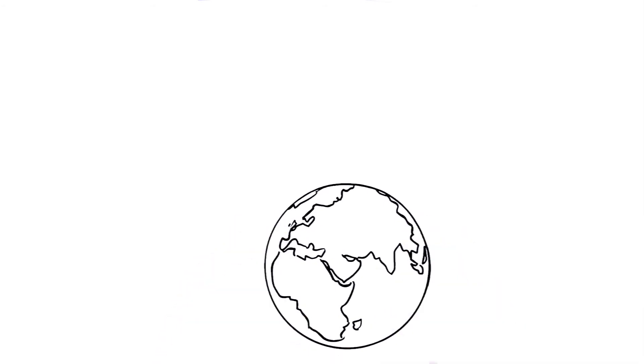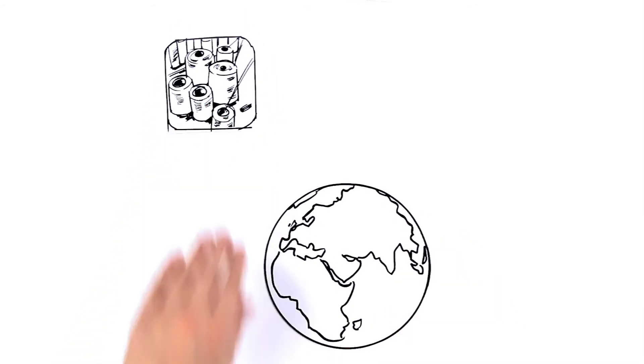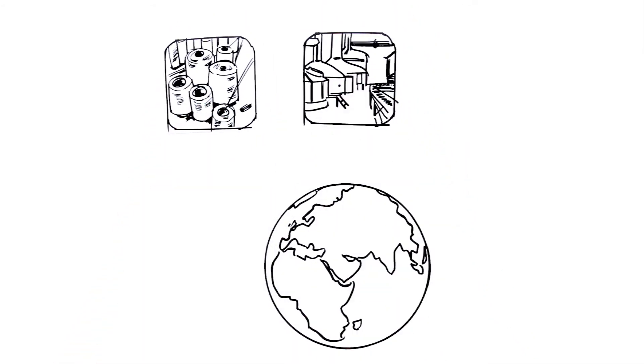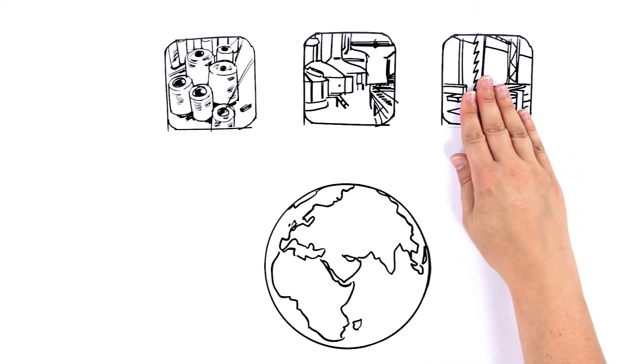Every day, industrial production facilities worldwide are running at full speed to produce products for everyday life, such as textiles, food, even timber products.